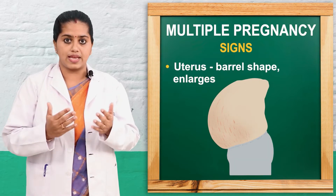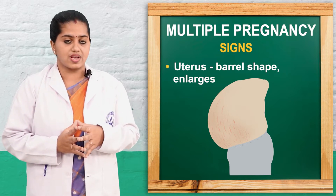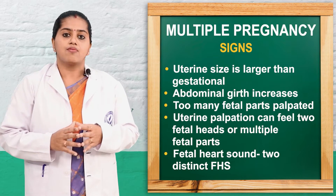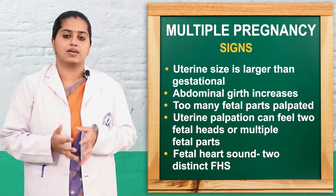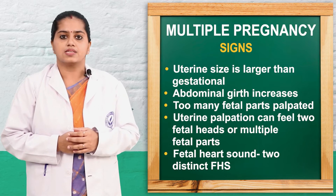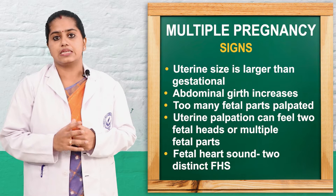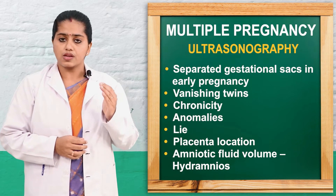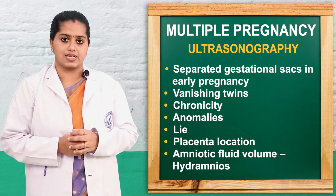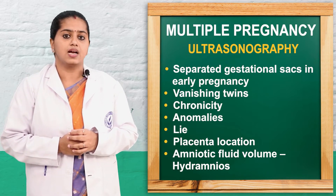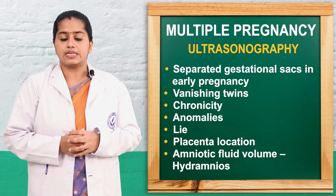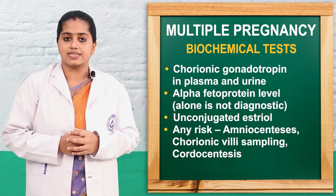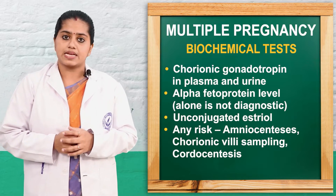On abdominal examination, inspection shows a barrel-shaped, large abdomen with more striae, and more fetal parts can be palpated. Fundal height can be more than the gestational week, abdominal girth more than 100 cm at term, and a double head can be found. Two fetal heart rates with a distinct difference of minimum 10 beats per minute can be heard. Ultrasonography can identify lie, presentation, number of gestational sacs, any vanishing twin, chorionicity, placenta location, and hydramnios. Biochemical tests like HCG, unconjugated estriol, and maternal fetal alpha protein can also be done.